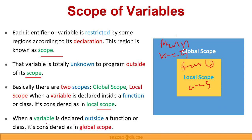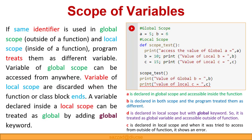When a variable is declared outside a function or class, it is considered as global. So for example, 'b' is a global variable. Now let us see an example to understand local and global variables better. If the same identifier is used in global scope — outside the function — and local scope — inside the function — the program treats them as different variables.